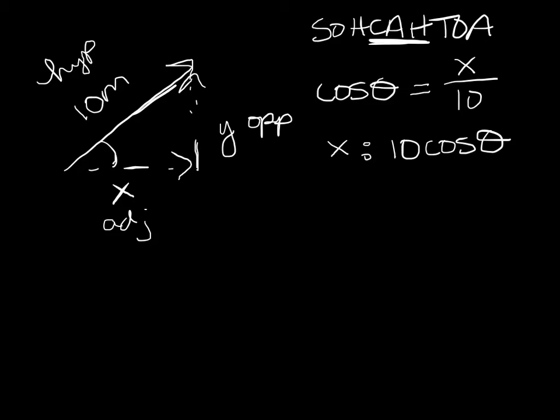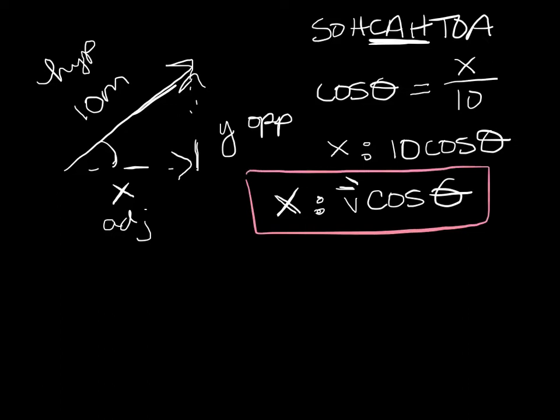But what we will find in physics is that your x component is always going to be whatever your vector was, so whatever your vector was, times the cosine of the angle. And that's the important thing to remember there for your x's and your y's. And that's how we got it. So we rearranged this cosine adjacent over hypotenuse to get that.